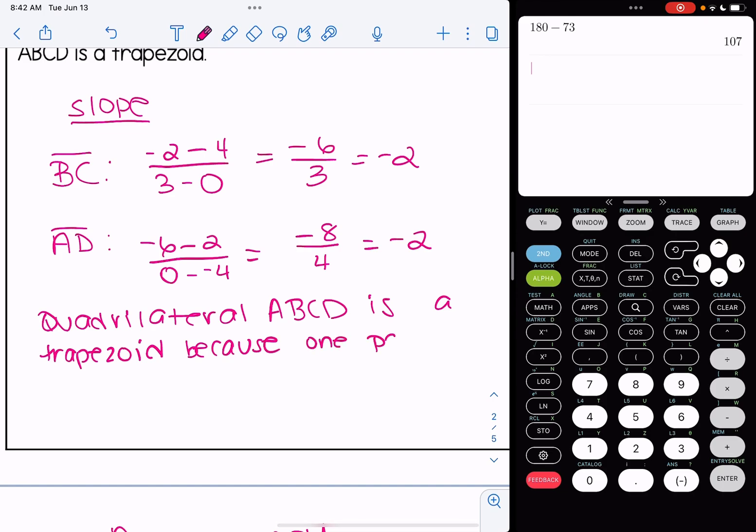Because one pair of opposite sides are parallel. You could also say because at least one pair of opposite sides are parallel. Both fit. And let's explain how we know they're parallel. I'm going to say since their slopes are equal.